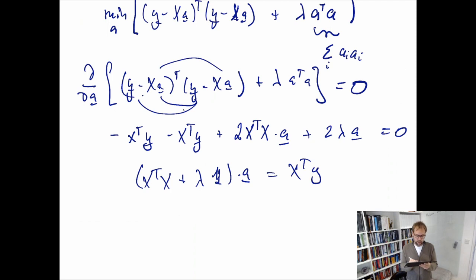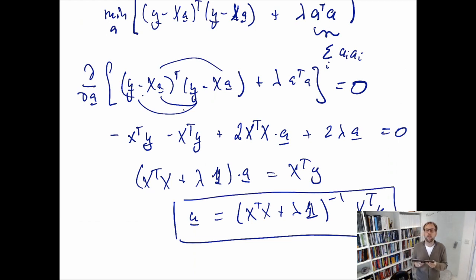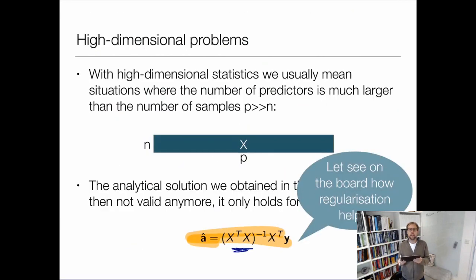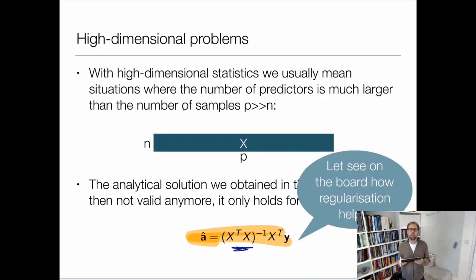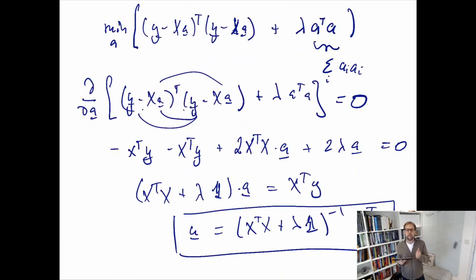Now it takes the inverse as before so we get the solution here a is equal to X transpose X plus lambda one identity matrix inverse times X transpose y. This is the solution we get and interestingly looks very similar as before if you go back, exactly the same only that in the brackets I have now a one plus lambda I. This is quite nice because now actually I will regularize the matrix, that's why something's called regularizer, because now I'm solving the issues.